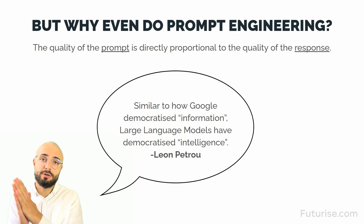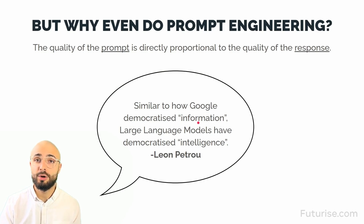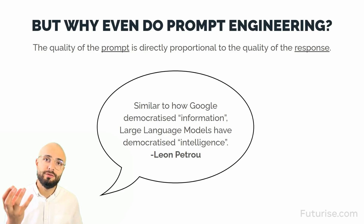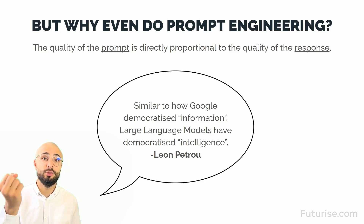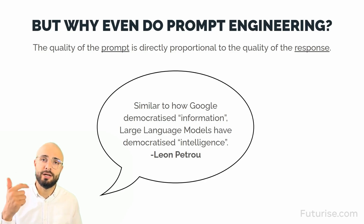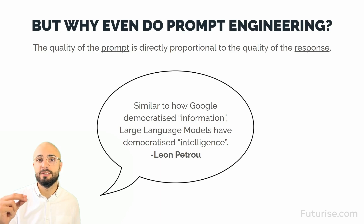On the screen I have a quote: 'Similar to how Google democratized information, large language models have democratized intelligence.' Kind of like back in the day when Google became available to everyone — you could simply type in any question and it would give you information to read through. Now with large language models, it's taking that one step further. Instead of just giving you information, it's giving you intelligence — both knowledge and creativity — and it's hyper-personalized to the question you ask. It's not giving you a list of search results; it's giving you the exact answer you want.